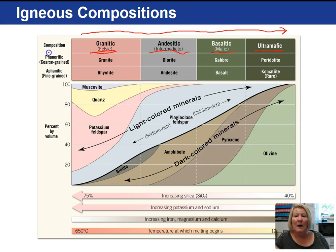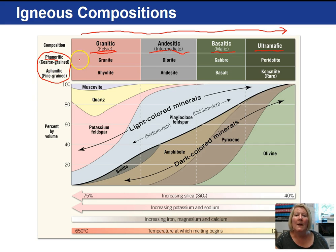These are our textural terms. Phaneritic — the term 'phaner' refers to visible — so an igneous rock with a phaneritic texture is coarse-grained, with large crystals large enough to be seen with the unaided eye. Examples of igneous rocks exhibiting the phaneritic texture include granite, diorite, gabbro, and peridotite.